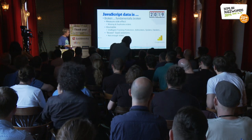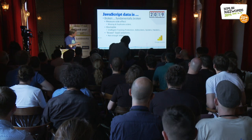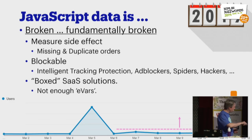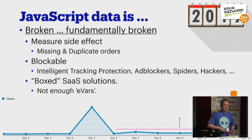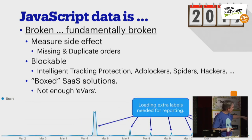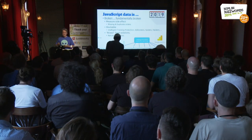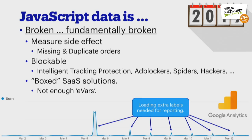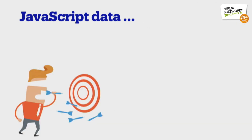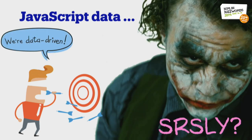In Google Analytics, we at some point saw a bump in the number of users and then a systematic uplift. It turns out that if you zoom in by the hour, we were loading additional labels from our data science to tag users. The tagging of the users actually changed the measurements in number of visitors on the site. So in my opinion, JavaScript-based measurements are fundamentally unreliable. And people still say we're data-driven.